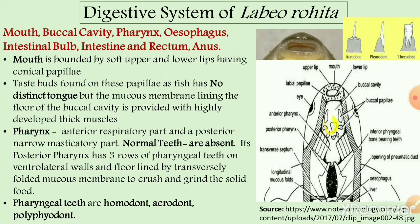In the buccal cavity, a tongue is not present. Instead, a mucous membrane is present which has highly developed thick muscles. So the tongue is absent in the buccal cavity of Labeo rohita.